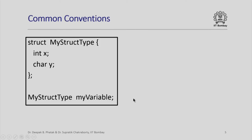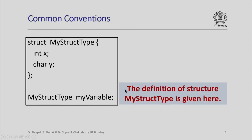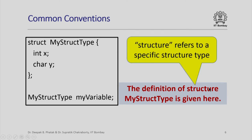Now let us start with some common conventions when speaking of structures. Here I have a simple structure definition. The name of the structure type is my_struct_type. It has two members named x and y. x is of type int and y is of type character. And here is a variable my_variable which is declared to be of the type my_struct_type. Now if I say the English sentence 'the definition of structure my_struct_type is given here', the usage of the word structure here really refers to a specific structure type, in this case my_struct_type.